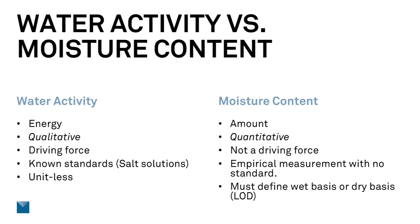For moisture content, there is no standard — you get an answer but you don't know if it's the correct answer. You can strive for precision in terms of repeatability. Also, other substances besides water can be evaporated off during loss on drying — alcohols and other volatiles can be driven off and that would increase your measured moisture content. Water activity is unitless because it's a ratio of vapor pressures with units canceling out. For loss on drying, you need to define either wet or dry basis before you begin.